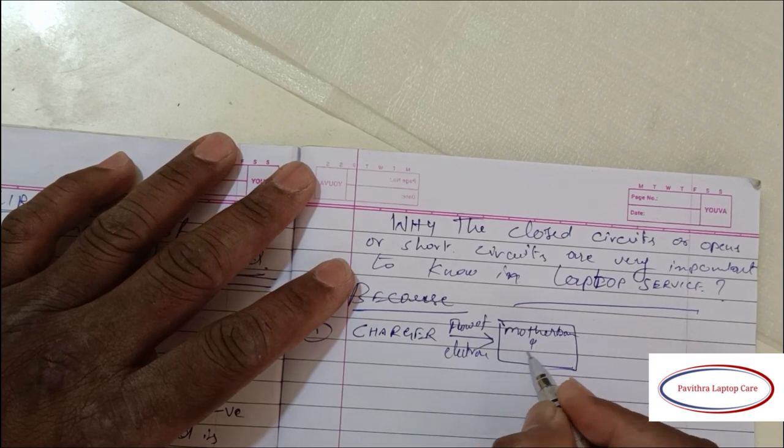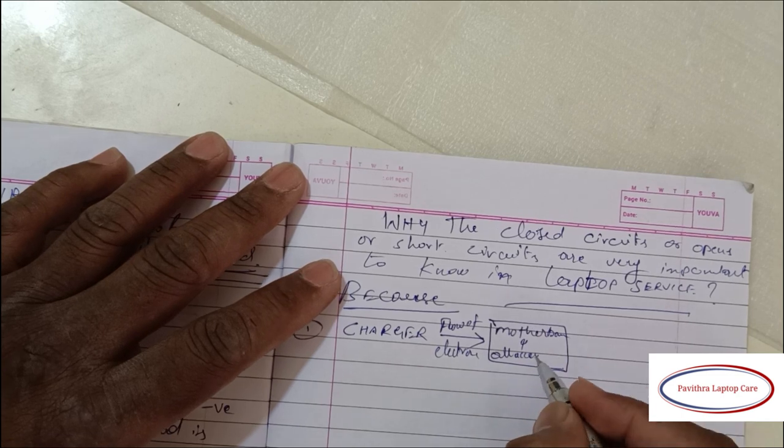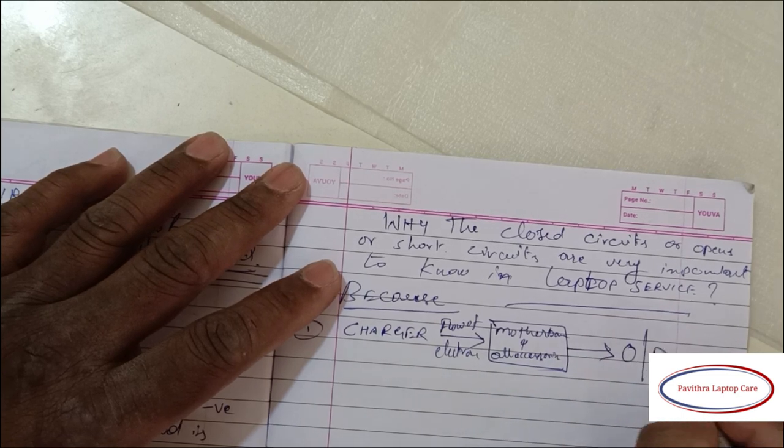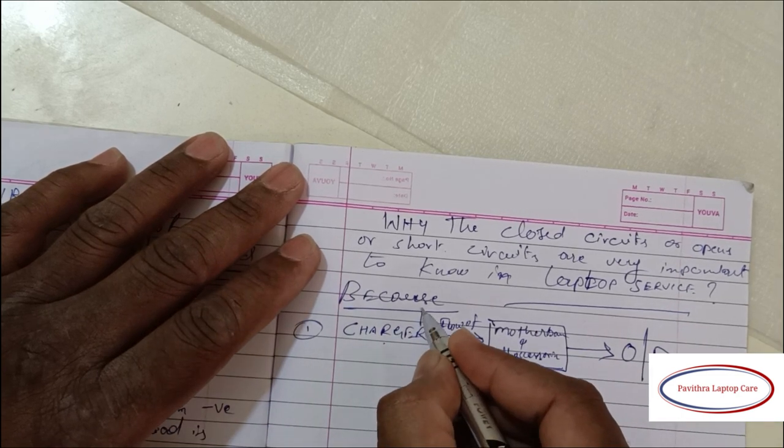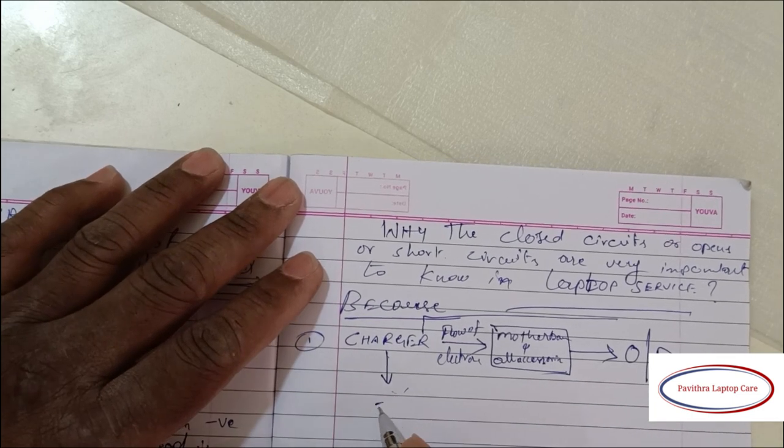Here in a small diagram, I want to show you the charger is first connected to the motherboard. It acts as a load and gives the output. It's called a complete circuit.